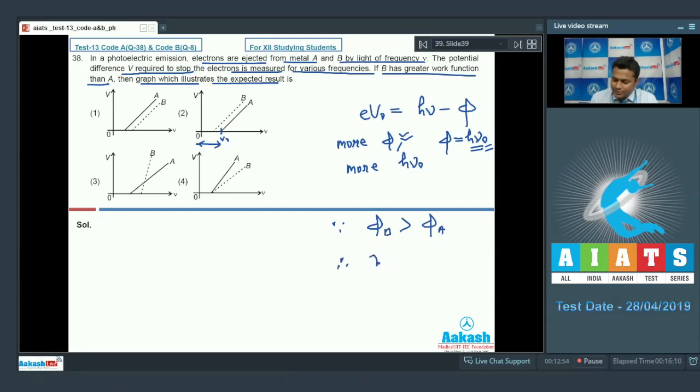Therefore nu naught for B is greater than nu naught for A, or B will have more intercept than A. So we will go with option number 1 only. Option number 1 will be truly correct. Now move on to the next, that is 39.